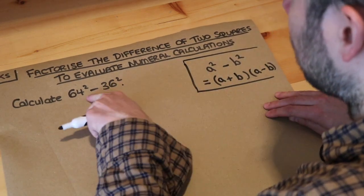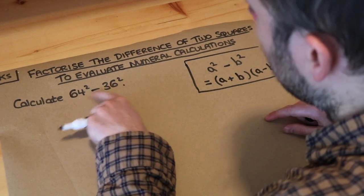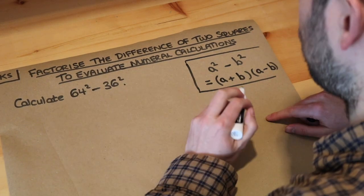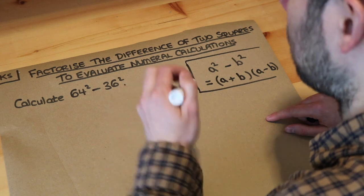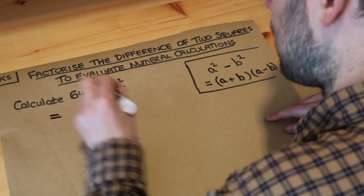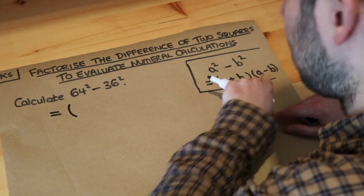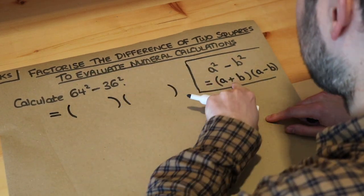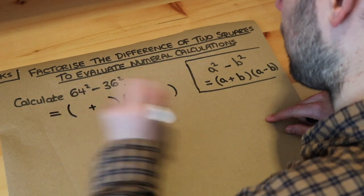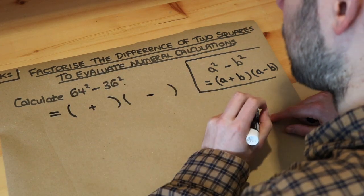Now we can apply that to this particular case, but rather than variables or letters, we've actually got numbers. The same principle still applies. We take this expression, which is the difference of two squares, and we can do two brackets just like before. We put plus in the middle of one of them and minus in the middle of the other one.